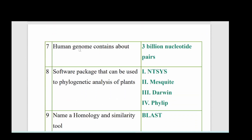The human genome contains about 3 billion nucleotide pairs. Software packages that can be used for phylogenetic analysis of plants include NTSYS, Mesquite, Darwin, and PHYLIP.